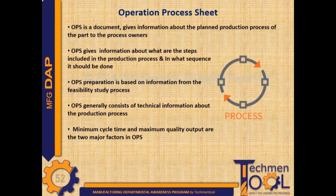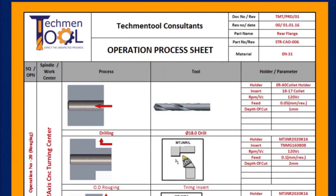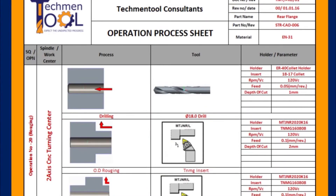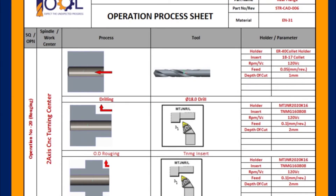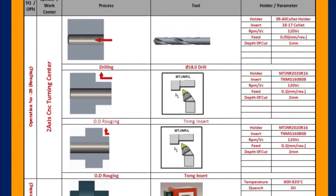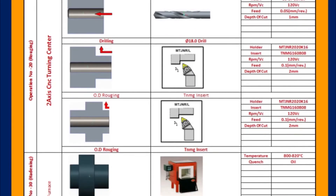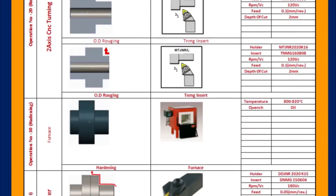This is the general format for an Operation Process Sheet. It consists of information about product description, operation details, work center details, process details, tools details, and holder or parameter details.